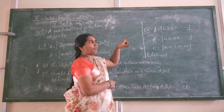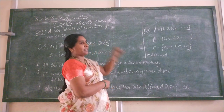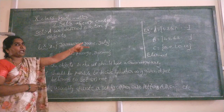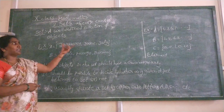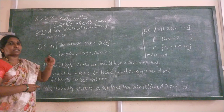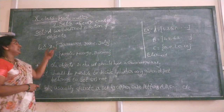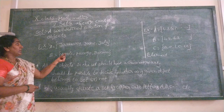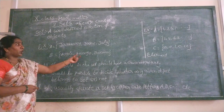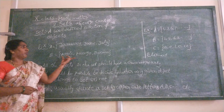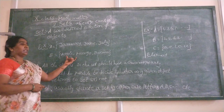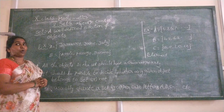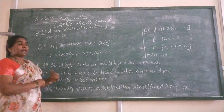Set means a well-defined collection of objects. For example, {January, June, July} — all those are the months in a year which are started with the letter J. This is also a well-defined set. Set B = {apple, mango, banana} — this is also a well-defined set, because we are able to decide that it is the fruit set.